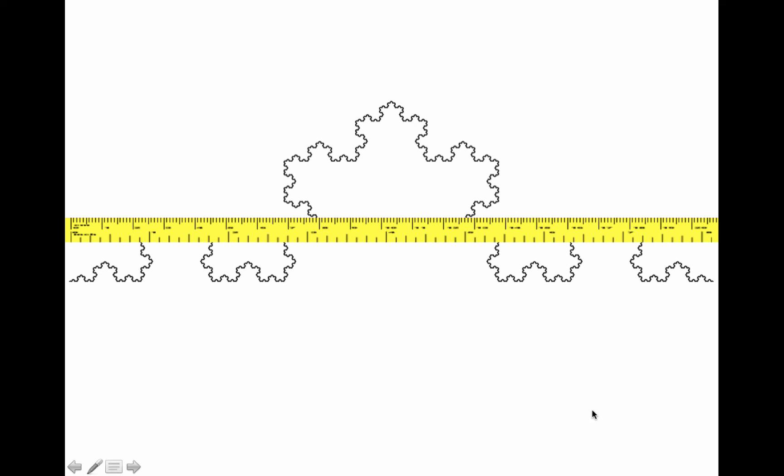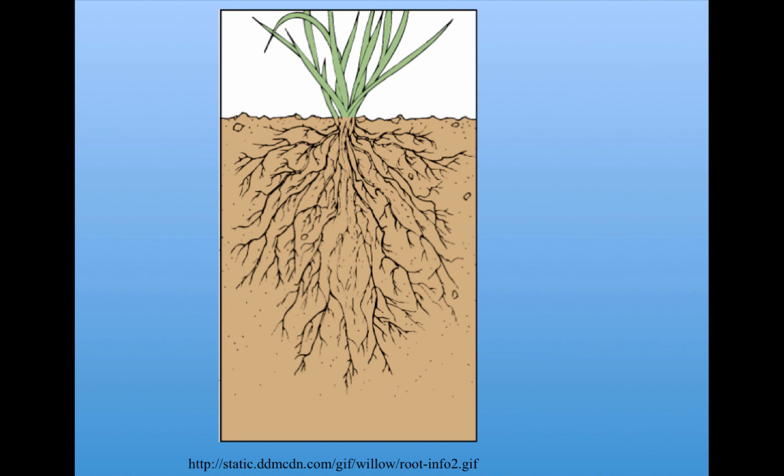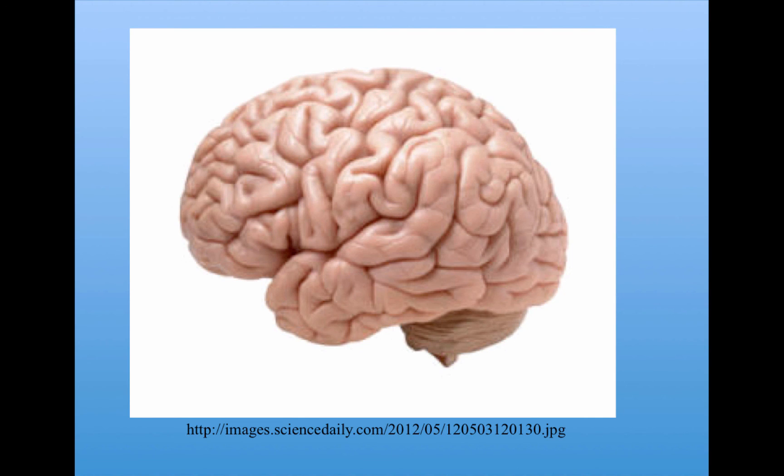That is, the curve is what's called space filling. There are many other examples of space filling structures in nature, such as the veins, arteries, and capillaries that make up the blood transport system in the body, the roots of plants that grow underground, and structures in the brain.